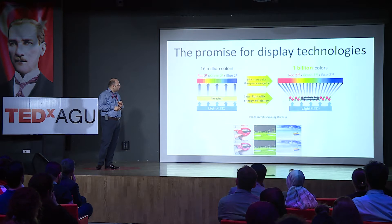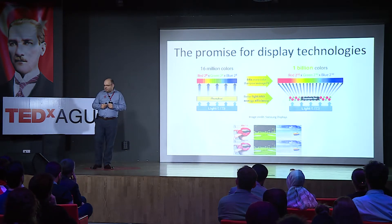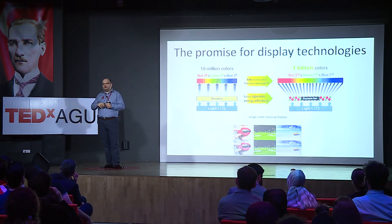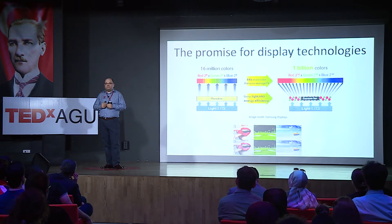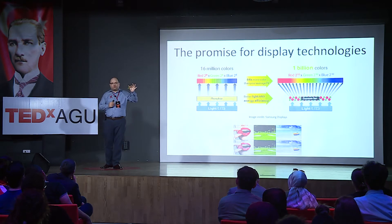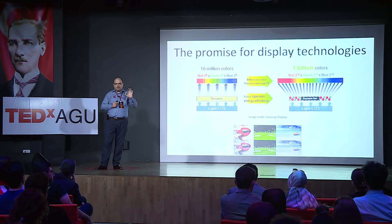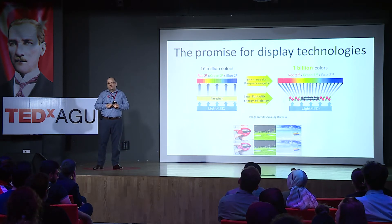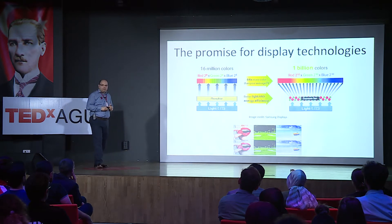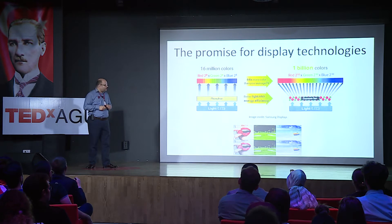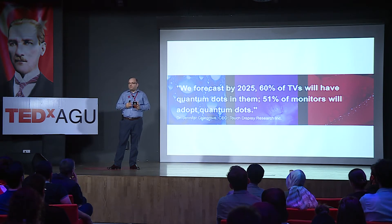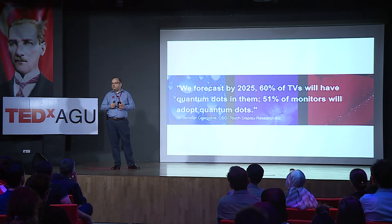Using these quantum dot particles, it is possible to go from 60 million different colors in a conventional display to 1 billion different colors, tuning the shades of the color spectrum with very pure emitters. These particles are now readily available in the market and are expected to reach tens of billions of US dollars in revenue. It would be possible to mimic real colors in nature on our displays, and market forecasts suggest over 50% of monitors and computer screens will be made of these materials in the near future.